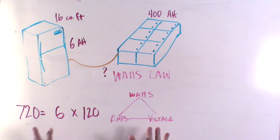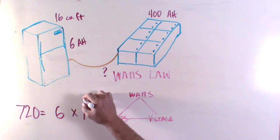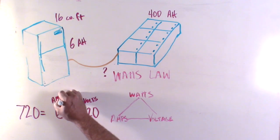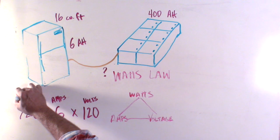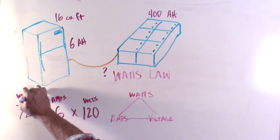So a refrigerator that draws six amps per hour from a 120 volt source requires about 720 watts per hour. Now this is running watts. Starting watts is much more, but that's only needed for a second or two so we're not going to count it. Okay, so how many amps does that same refrigerator draw on a 12 volt circuit? Still six amps? That's what most people think. But no, not even close.